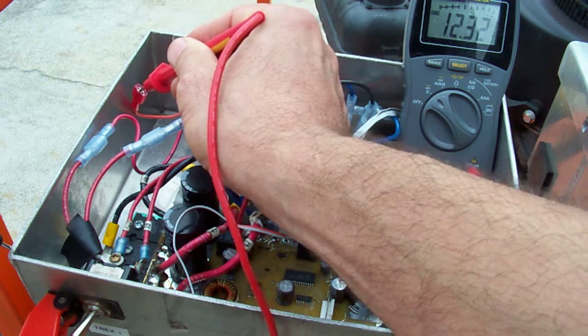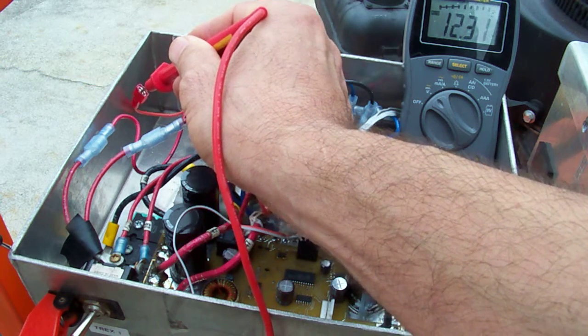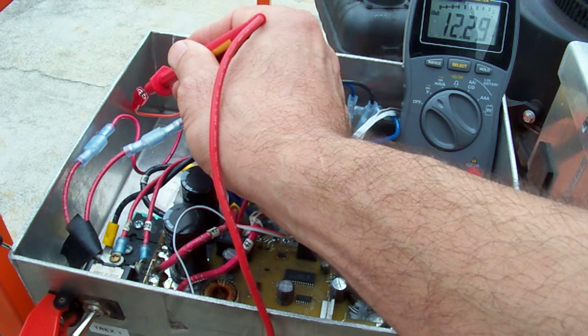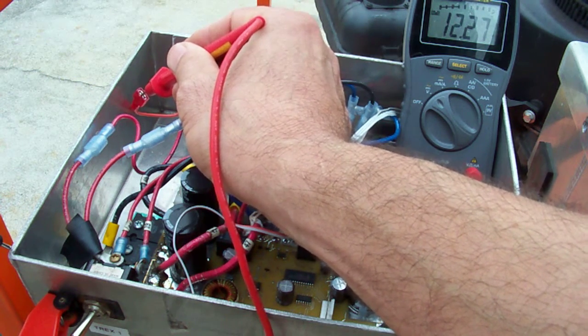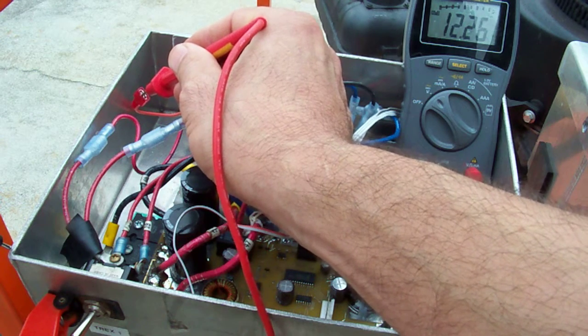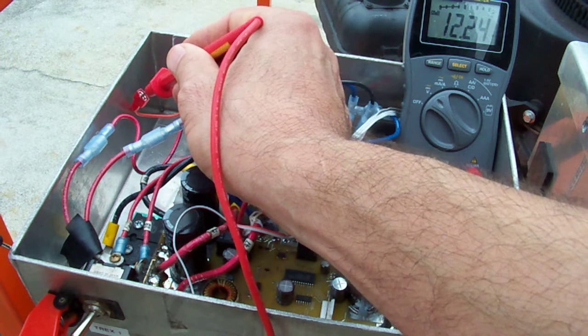We want that to be 14 volts. That's how you check the DC to DC booster. If your DC to DC booster is less than 14 or less than 13 volts, please let us know and contact us. Thank you.